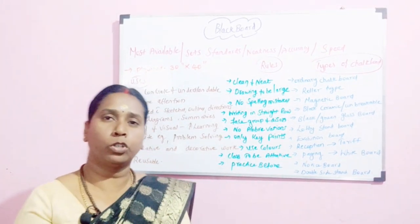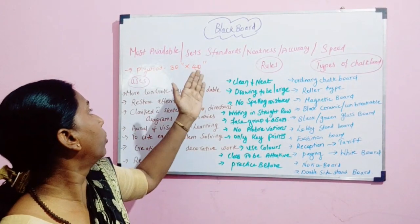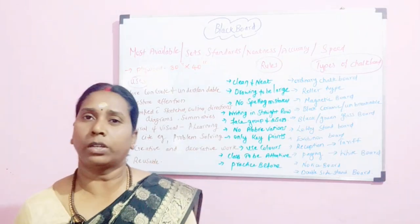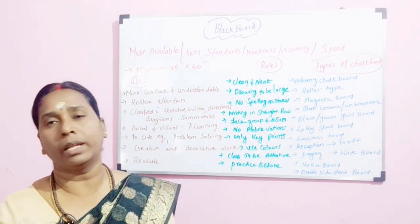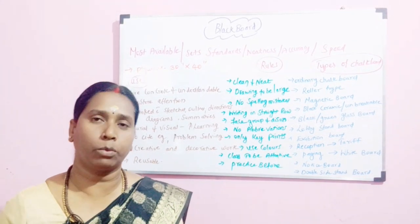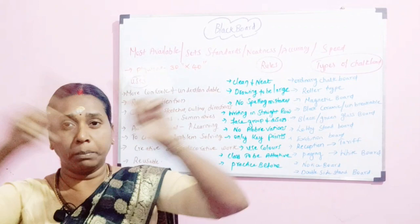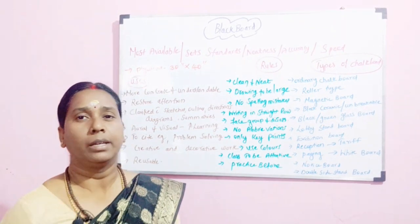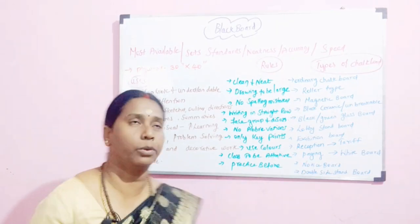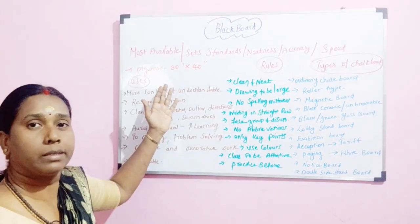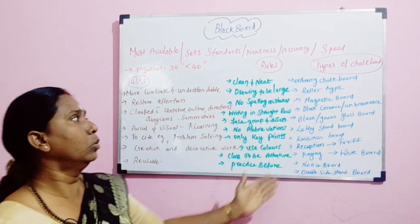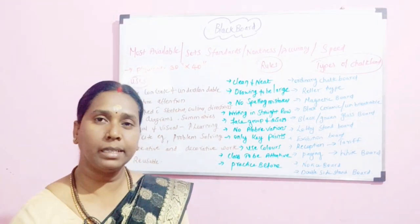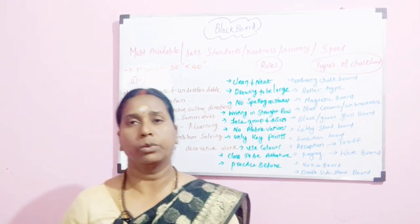With this, we complete chalkboards or blackboards. We have discussed the meaning of the boards. The size of the board is going to be 30 inches into 40 inches — that is the normal size of the board where you cut a plywood and make arrangements. In schools you will see big blackboards and double boards also. According to affordability and the area where you are placing the blackboard, it will vary. We have seen the blackboard, the size, the uses, the rules, and the types of boards available. Hope you understood about blackboards. Let us discuss in the next class with a new topic. Till then, take care. Bye.